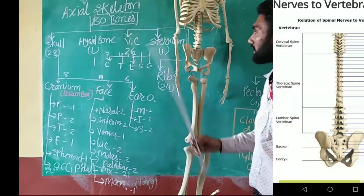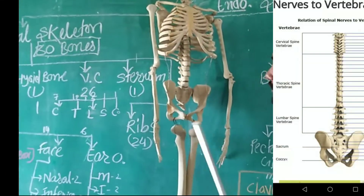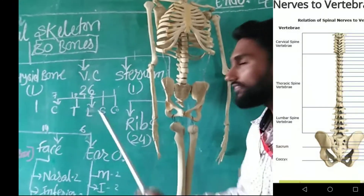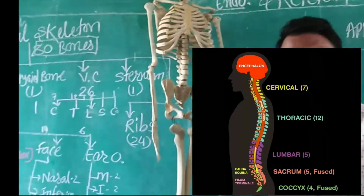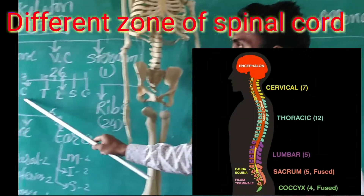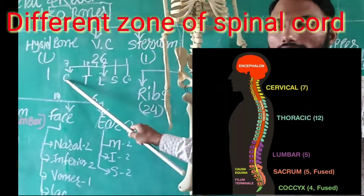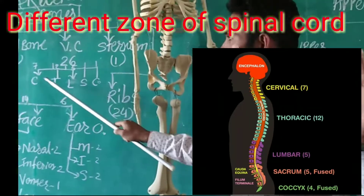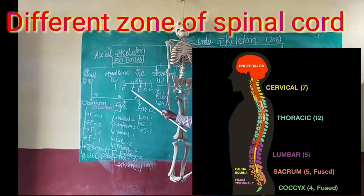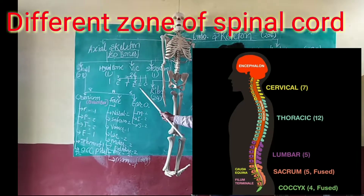When we talk about the vertebral column, the total vertebral column count is 26. The cervical vertebra is 7, divided into 5 parts. As you can see in the picture, the cervical vertebra is shown. The vertebral column includes cervical vertebrae, sacrum, and other sections.